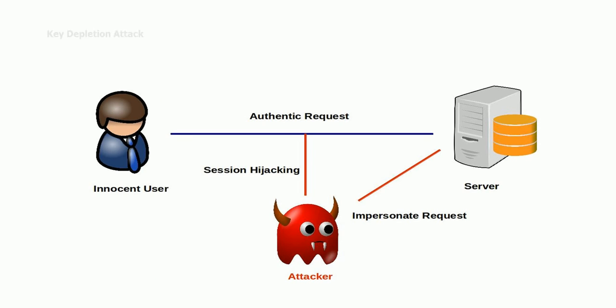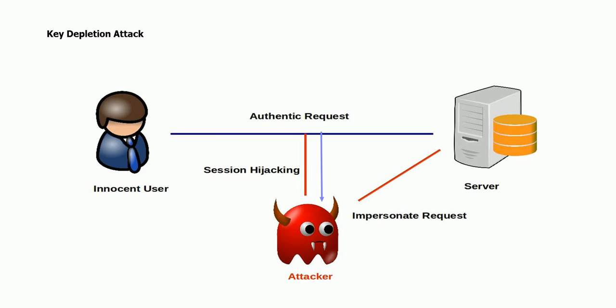Another common attack in cognitive radio is the key depletion attack. Because spectrums are sensed, allocated, and reallocated quite frequently, a tremendous number of sessions are generated during communication. A large number of sessions causes frequent change of keys. Security protocols of the transport layer, like SSL and DTLS, establish cryptographic keys at the beginning of every session. Since the number of sessions in cognitive radio networks is extremely large, a large number of keys are established, increasing the probability of using the same key twice. Key repetition can be exploited to break the underlying cipher system.